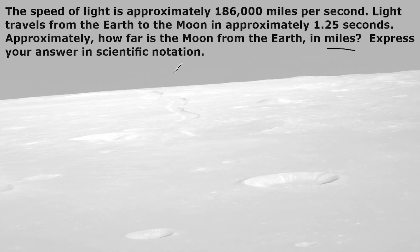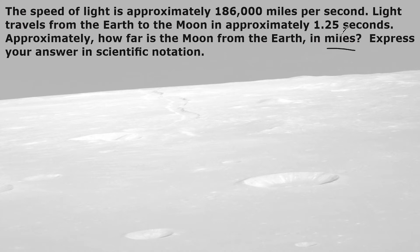Right off the bat, they give us a unit rate. It states that in one second, light travels 186,000 miles. So in two seconds that would be double the time, so we would double the distance. In three seconds we would triple the distance, and so on. It takes light approximately 1.25 seconds to get from Earth to the Moon, which is a little bit longer than one second, meaning our distance is going to be a little bit bigger than 186,000 miles. It's 1.25 seconds, so we would multiply this by 1.25.